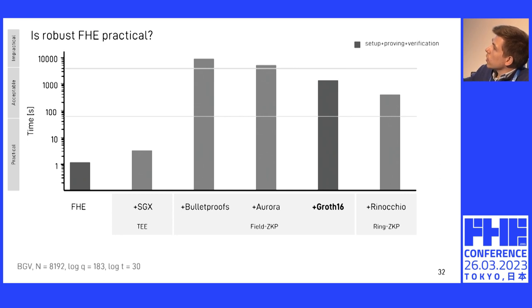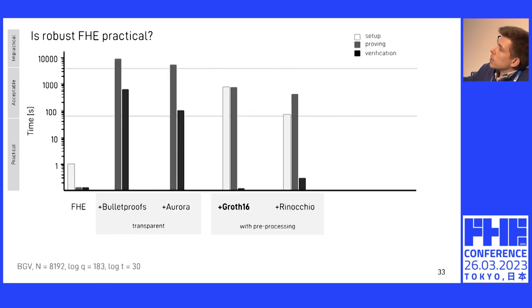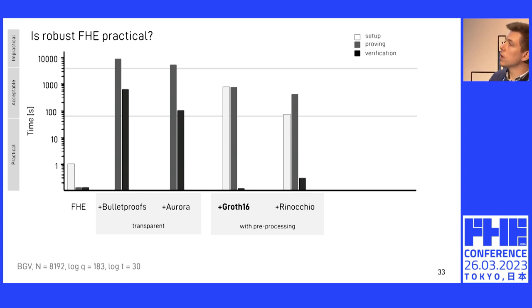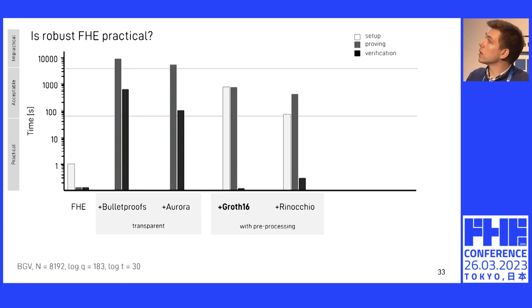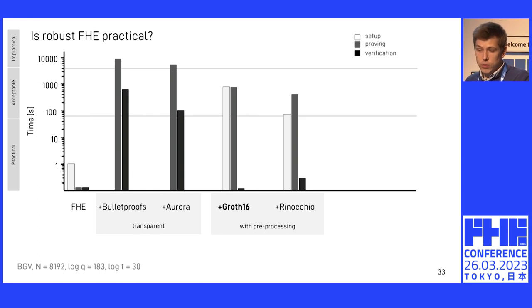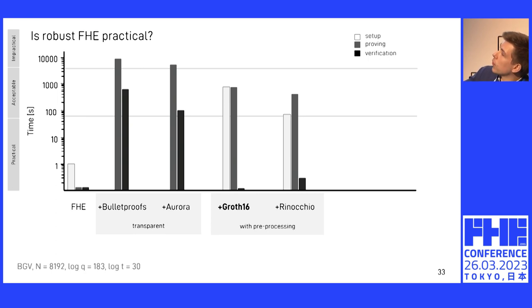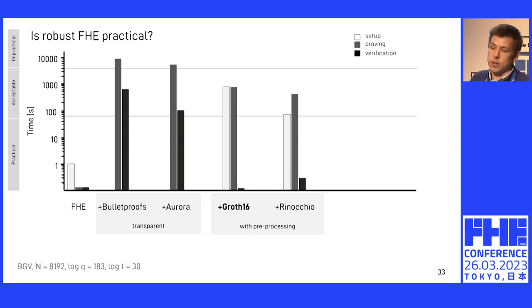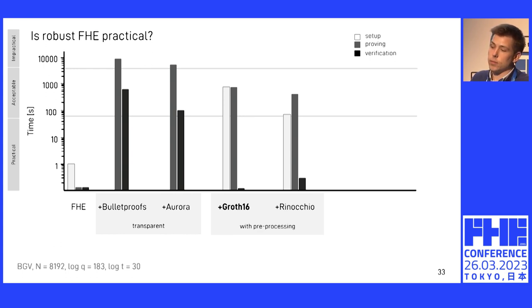Bulletproofs give a very high overhead. Groth16 and Rinocchio both give an acceptable overhead. Looking specifically at all the cryptographic proofs, we can split times into a one-time setup and then the proving phase and verification phase. Bulletproofs are transparent knowledge proofs — they don't have a one-time setup, at the expense of very slow verification. Whereas both Groth16 and Rinocchio have a pre-processing phase that offloads a lot of computation to a one-time per-circuit pre-processing, in exchange getting constant verification time. For Groth16, the verification time is smaller than for FHE decoding and is constant, so it won't grow with your ciphertexts. For Rinocchio, the verification time is a bit bigger because we operate in these big polynomial elements that constitute the proof.